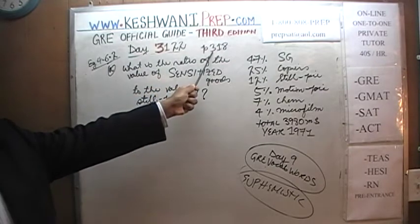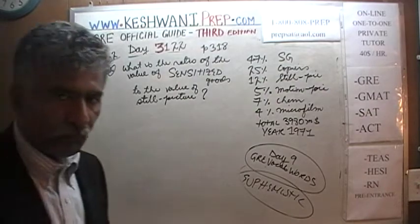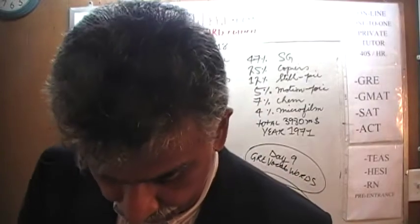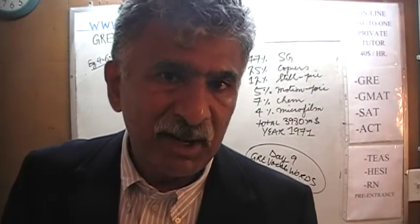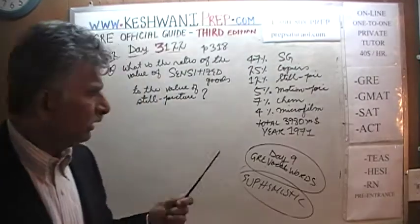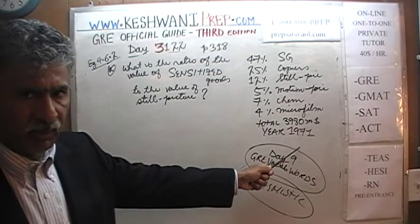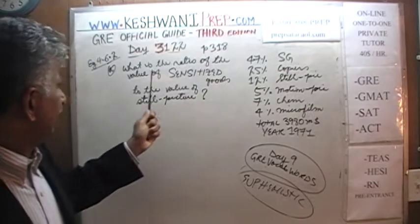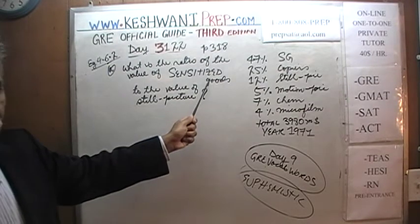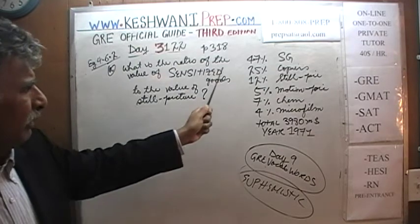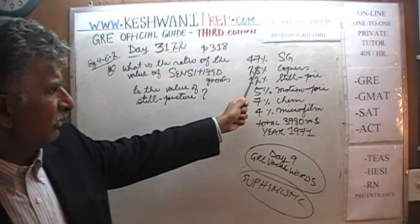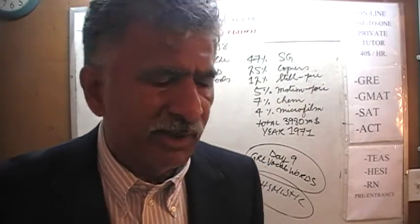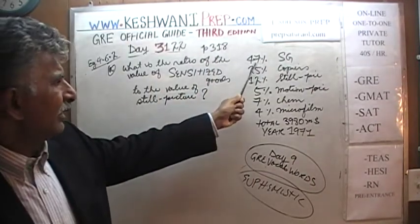We'll do the problem on page number 318, example 4.6.2. Please turn to it. Make sure you read the problem yourself because on the blackboard I abbreviate a lot of things. What is given to us in the book is actually a pie chart. Instead of drawing the actual pie chart, I just gave you the figures. These figures are for 1971. The first category is what they are calling sensitized goods, which is 47% of their total production.